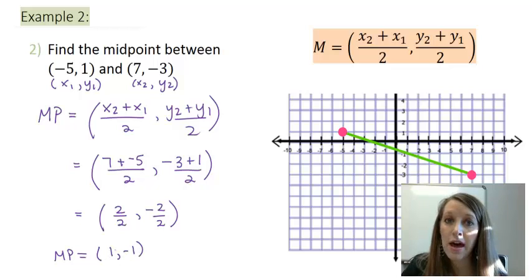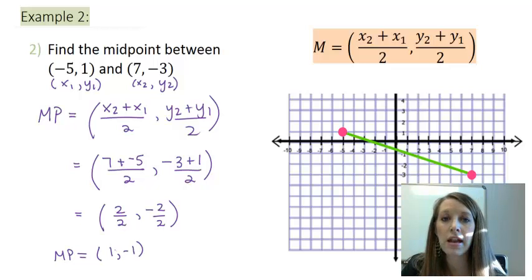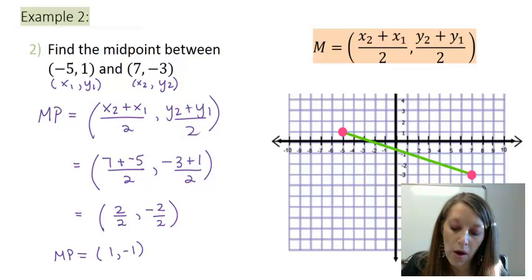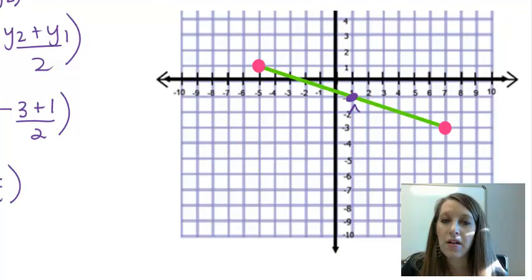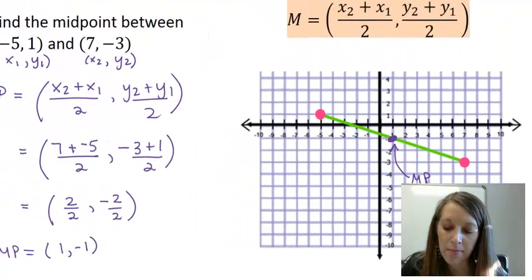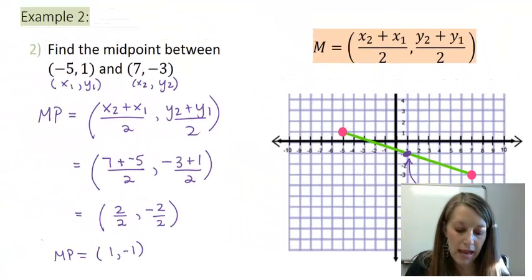And I can double check that by graphing it and make sure that it actually looks like it is the middle between these two points. So 1, negative 1 is graphed right here. And that looks like it did divide my line sector into two equal units. So that confirms that my midpoint is 1, negative 1.